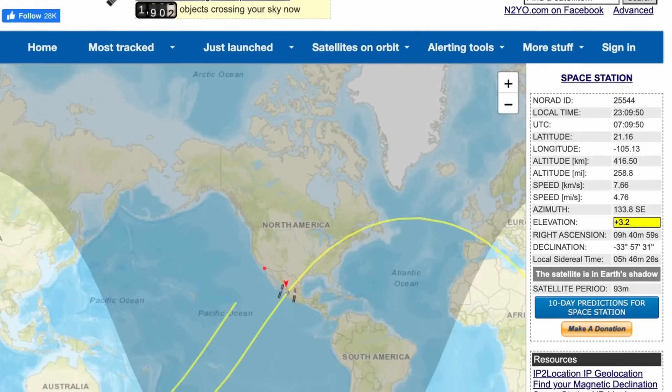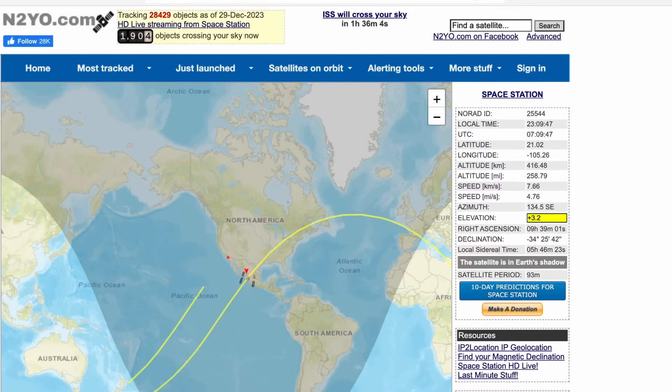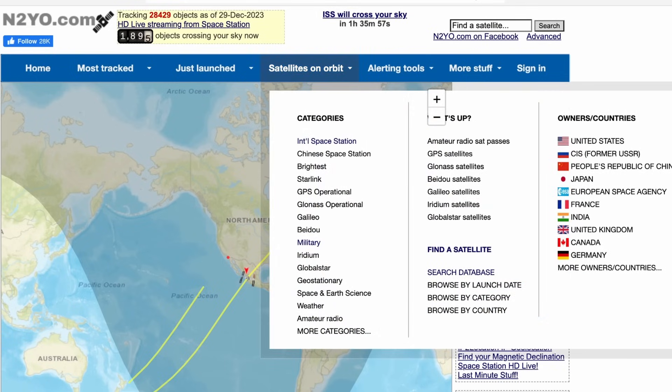One tool that can help you track down satellites is N2YO. N2YO is an online website that provides real-time satellite tracking data, allowing users to monitor the positions and trajectories of thousands of satellites. To use N2YO to track down a satellite, simply visit N2YO.com. Then go under Satellites on Orbit and click Search Database.